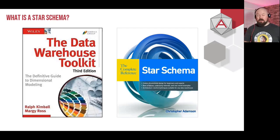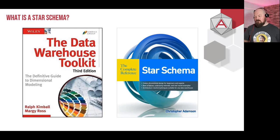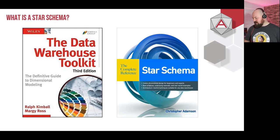Dimension tables hold all the attributes and descriptive information you want to analyze. If you want to go deeper on this topic, the two key texts are Ralph Kimball's 'The Data Warehouse Toolkit' — pushing 30 years old but still the definitive guide — and the more recent 'The Complete Reference Star Schema' by Christopher Adamson. Definitely recommend checking those out.